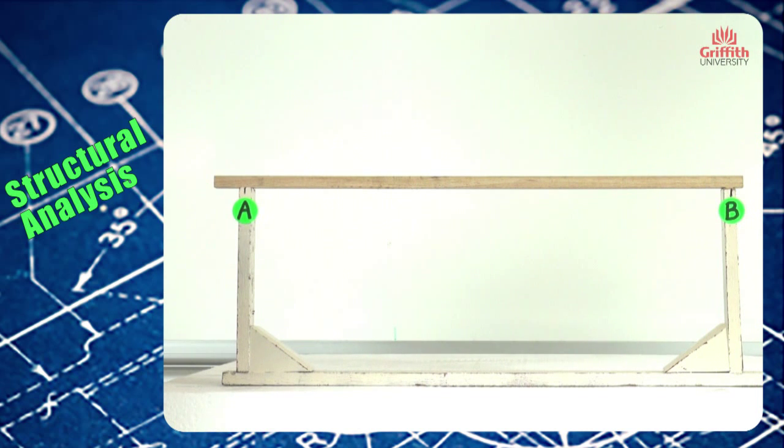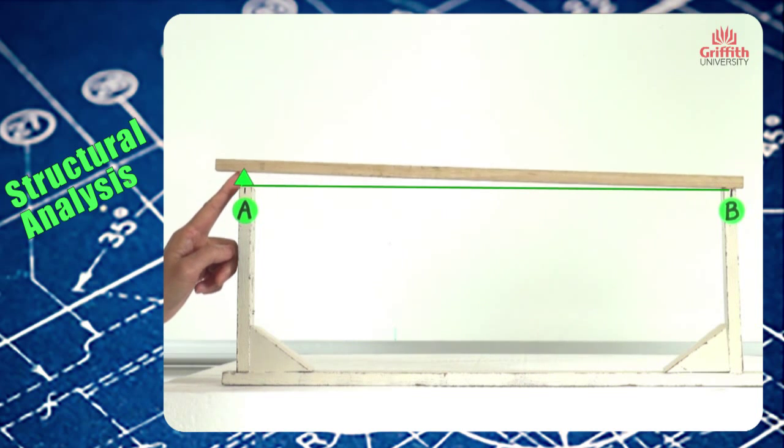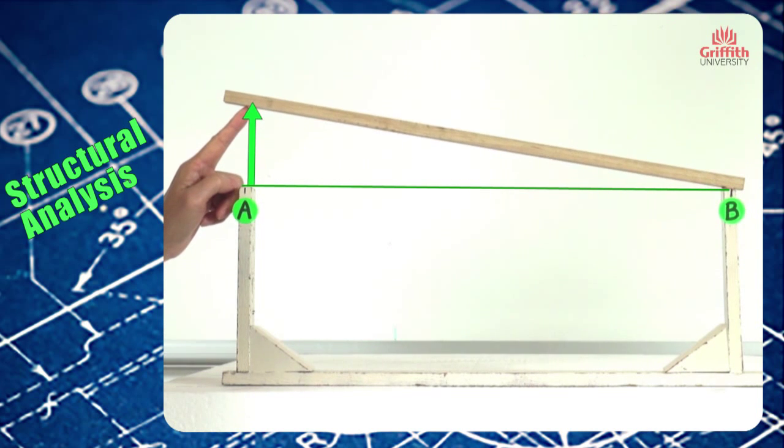Now if we apply a positive action, a small displacement at point A, we will see that the deflected shape looks like this.